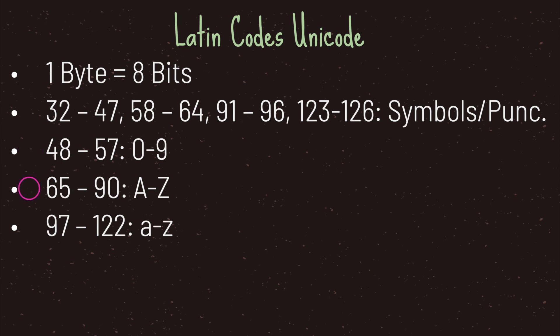The third subcategory is uppercase Latin characters A through Z, assigned to decimal values sixty-five through ninety. The fourth subcategory is lowercase Latin characters, assigned to decimal values ninety-seven through one hundred twenty-two.